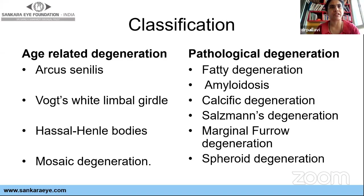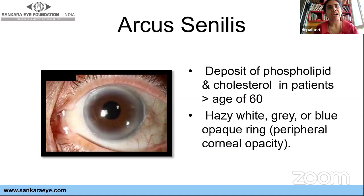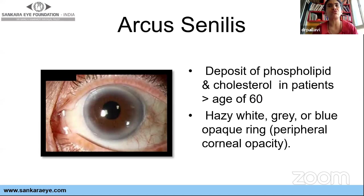Arcus senilis — everybody knows and everybody sees it. This is a deposit of phospholipid and cholesterol, seen in the majority of patients over 60 years. It is grayish-blue and visible. Two important clinical implications: if it occurs before the age of 60, in the 40s and 50s, we call it arcus juvenalis. Arcus juvenalis has a high association with coronary heart disease and hyperlipoproteinemia, especially type 1 and type 2. Whenever we see young patients with this kind of arcus, make sure you refer them to a physician.